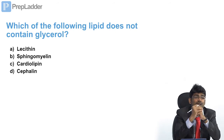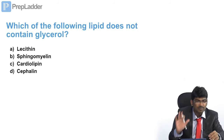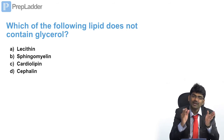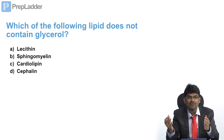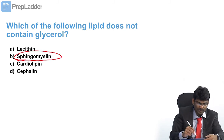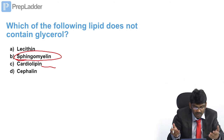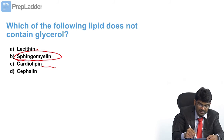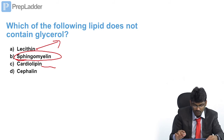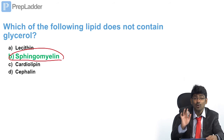Which of the following lipids does not contain glycerol? Triglyceride is a simple lipid containing glycerol. There are two types of phospholipids: glycerophospholipids and sphingophospholipids. Sphingomyelin is a sphingophospholipid — it does not contain glycerol. Cardiolipin (diphosphatidylglycerol) is a glycerophospholipid. Lecithin is phosphatidylcholine — a glycerophospholipid. The answer is sphingomyelin, which is a sphingolipid and does not contain glycerol.